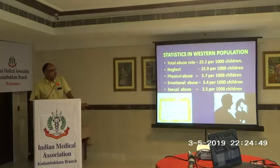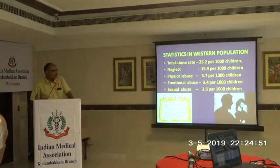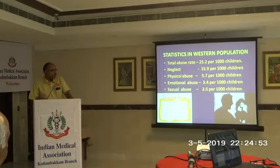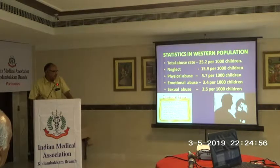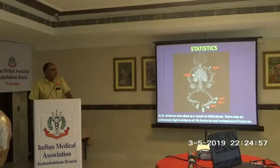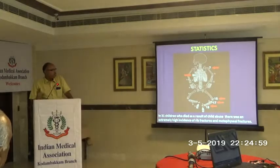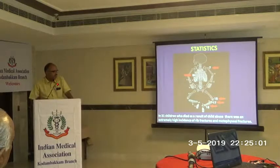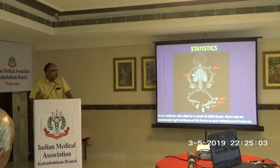Statistics show categories of neglect, physical abuse, emotional abuse, and sexual abuse — per thousand children. The most common affected areas are the entire limb — appendicular or the axial skeleton.